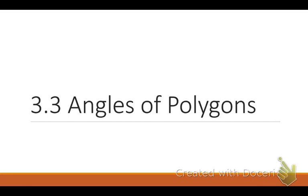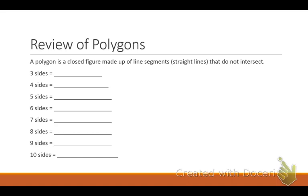In today's lesson, we're still focusing on this concept of angle measures and how to find unknown angle measures. The first thing you need to understand is: what's a polygon in the first place? You need to write down this definition. A polygon is a closed figure — it can't have an open side, the whole figure has to be closed in. It's made up of straight lines, so it can't have any curves, and those straight lines cannot intersect.